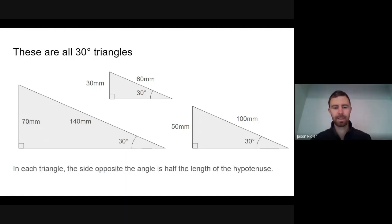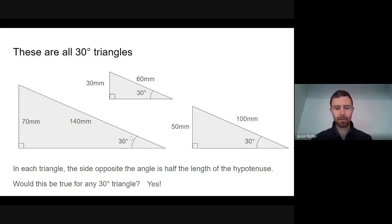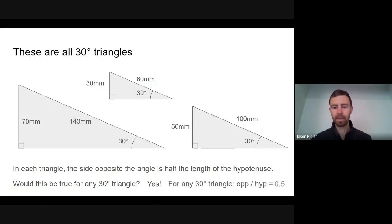In each triangle, the side opposite the angle is half the length of the hypotenuse. The opposite side is half the hypotenuse. Would that be true for any 30-degree triangle? The answer is yes, because the angle fixes the shape of the triangle. For any 30-degree triangle the opposite side opposite that 30 degrees is always going to be half the hypotenuse, because any 30-degree triangle has the same shape. So the opposite will always be half the hypotenuse — opposite over hypotenuse equals 0.5.